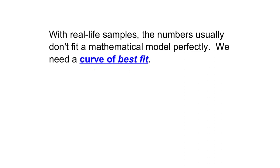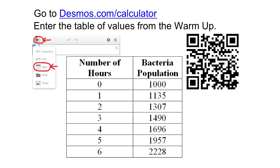I want to show you how you can use software to find the curve of best fit for your model. We're going to try to make a graph with a curve of best fit for the data from the warm-up. Go to desmos.com/calculator — if you've never used this before, it's a very easy-to-use graphing calculator. Once you're in there, go to the plus sign and select table. Then you can start inputting your data. Use number of hours for the x variable and bacteria population as the y variable. Pause the video and take a minute to create your table of values.